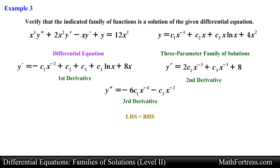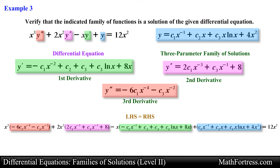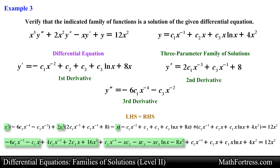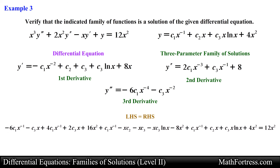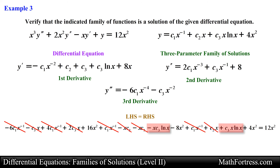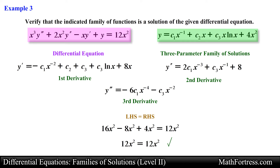Now it's just a matter of substituting these derivatives into the differential equation and verifying that both the left and right hand sides match. Substituting the expressions we obtain the following. Next let's distribute the terms and collect like terms to simplify. The terms containing parameter c sub 1 cancel each other out. The terms containing c sub 3 also cancel. The terms containing c sub 2 are eliminated, and finally the terms containing c sub 3 along with x and the natural logarithm also cancel out. This simplifies to 12x squared, which matches the right hand side of the equation. Hence this three-parameter family of solutions satisfies the differential equation.